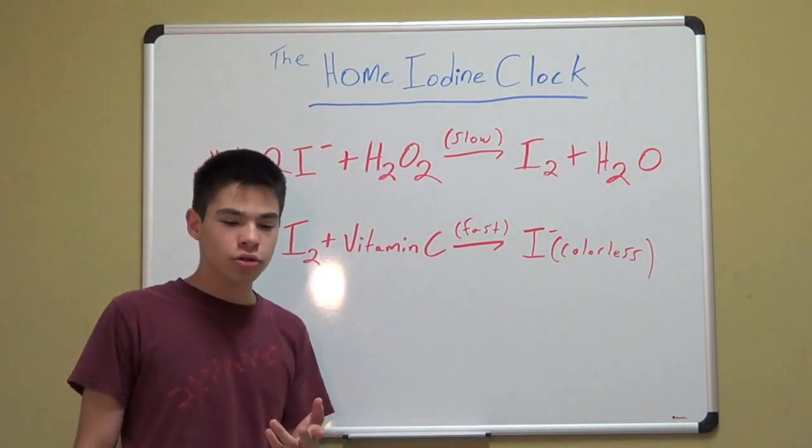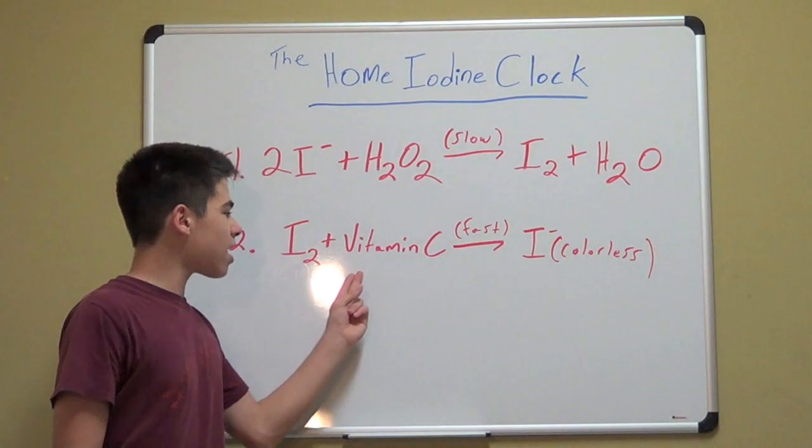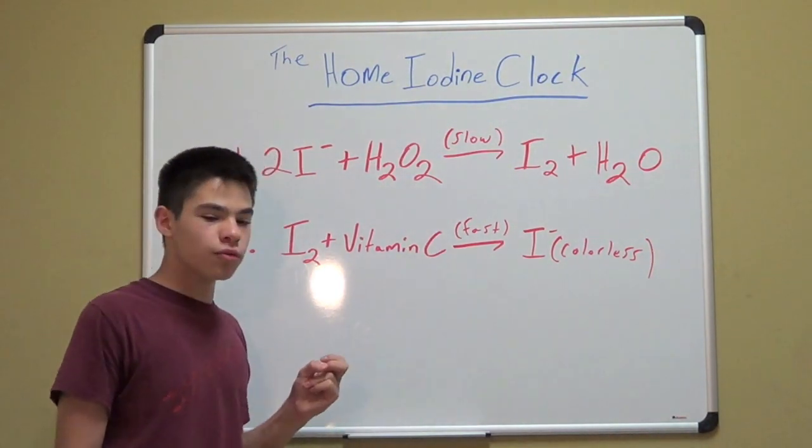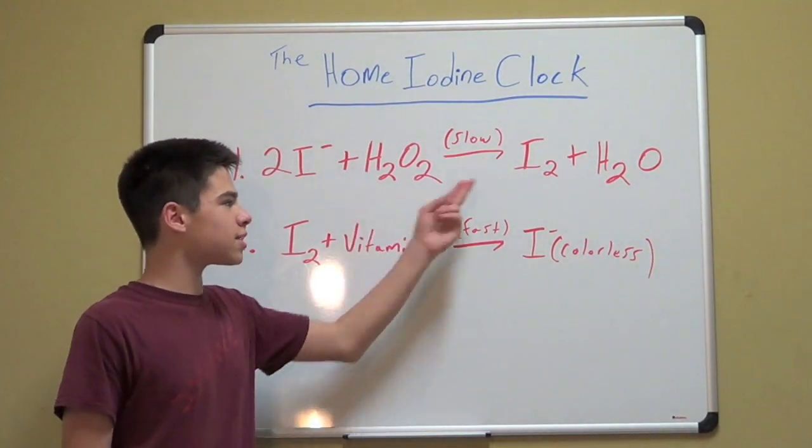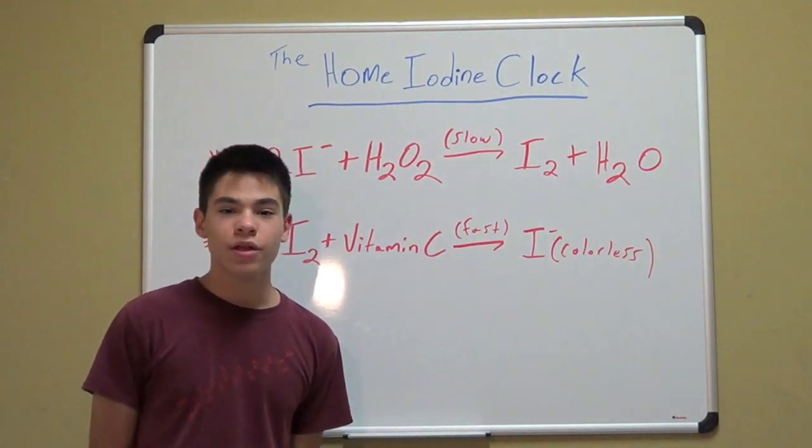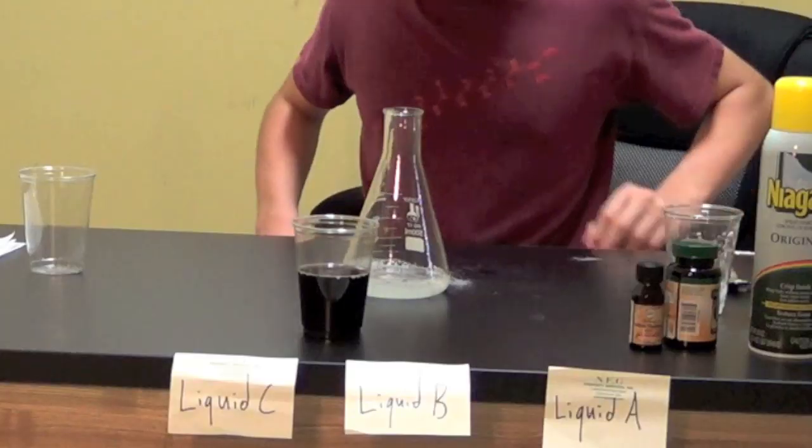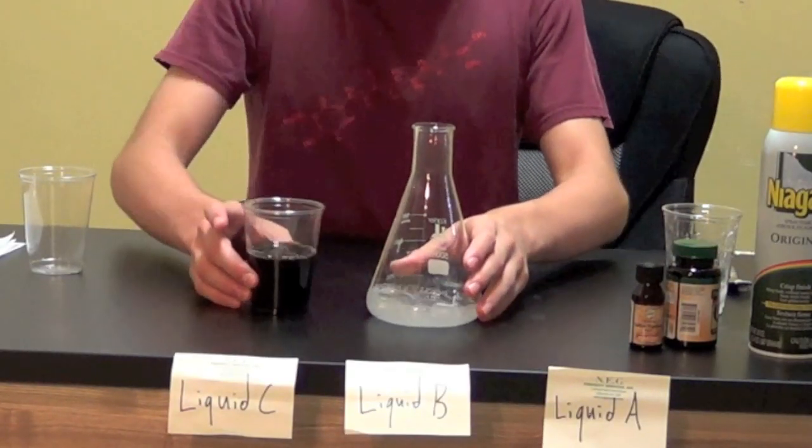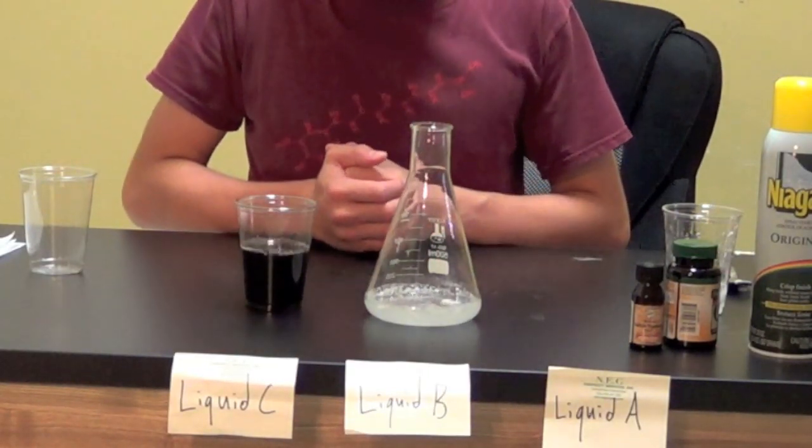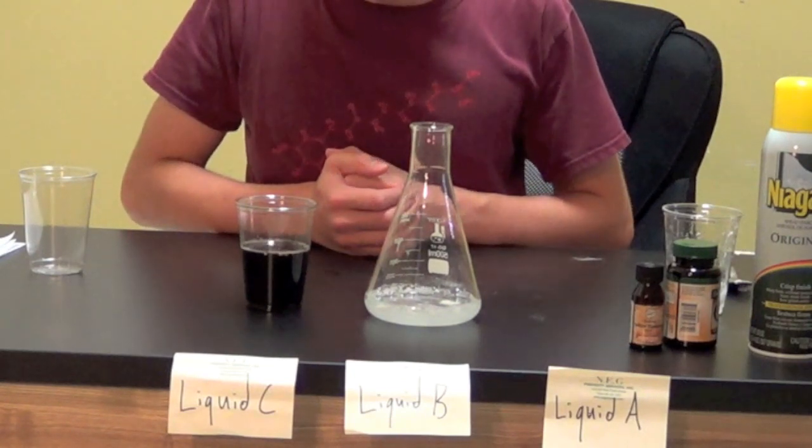But, once the starch goes blue, that means that the vitamin C has been completely consumed, and the starch shows the presence of elemental iodine. Elemental iodine can be dangerous and toxic, so you must dispose of it properly.